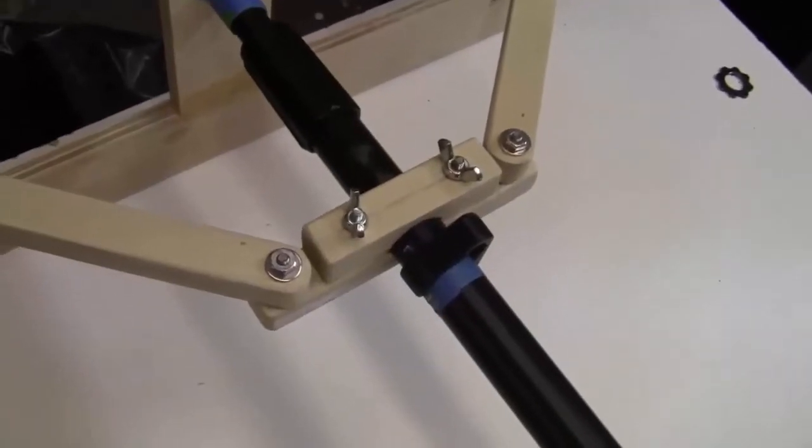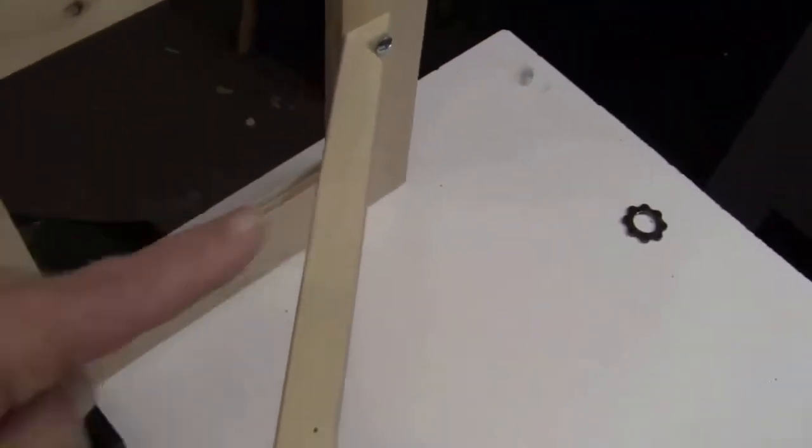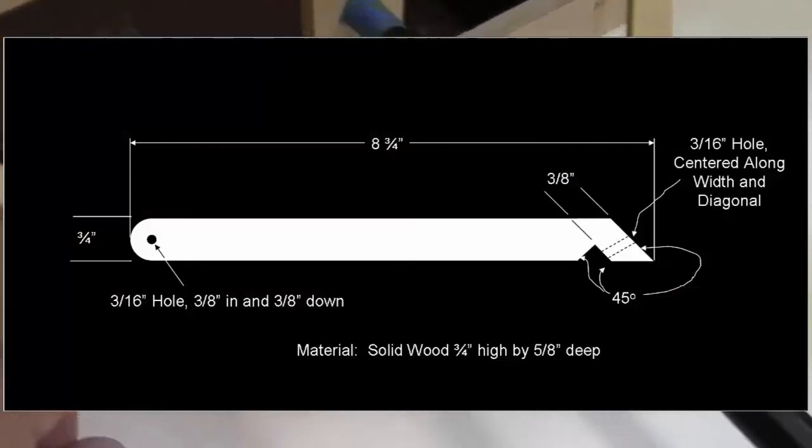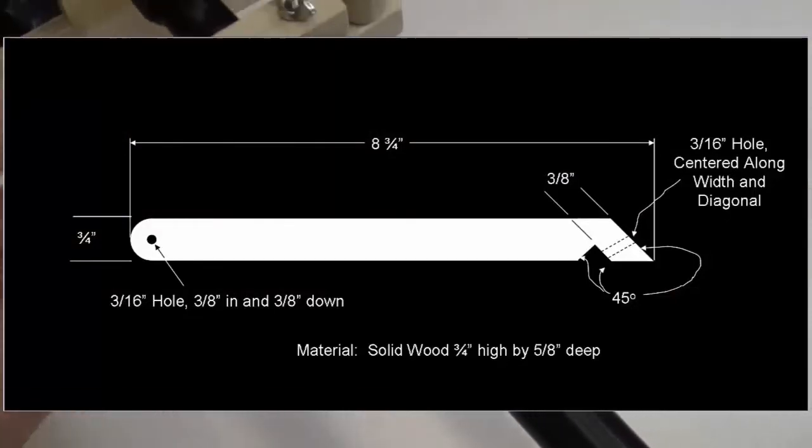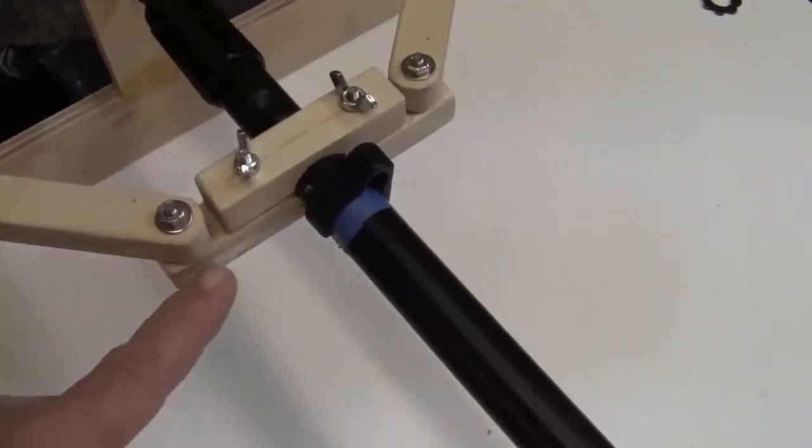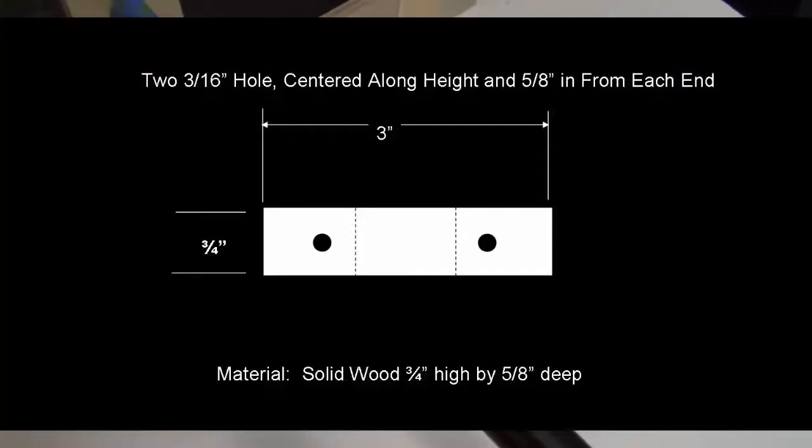Now let's look at the support system. I have two diagonal pieces, and the dimensions are shown here. I have two horizontal pieces, a smaller one and a larger one, and the dimensions are shown here.